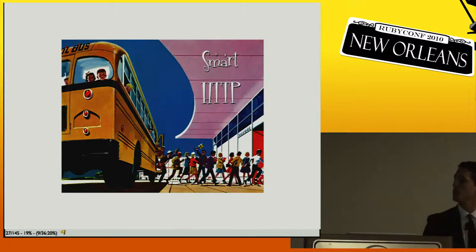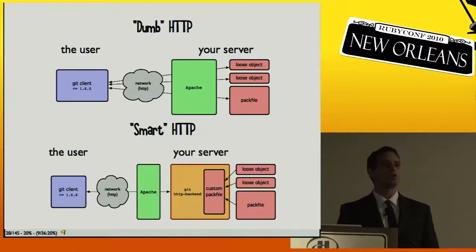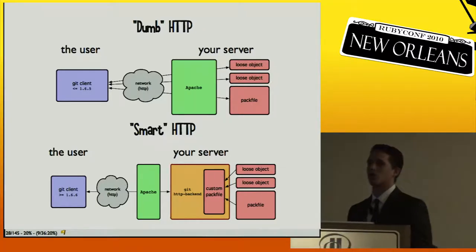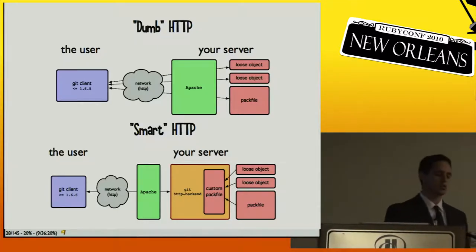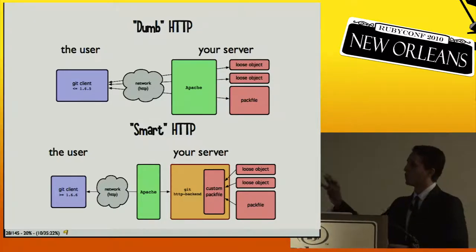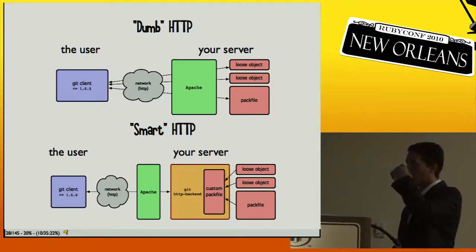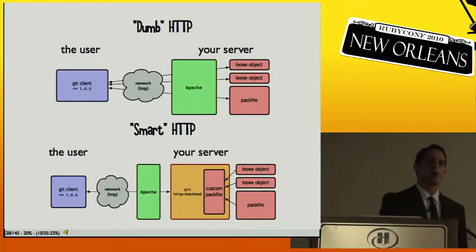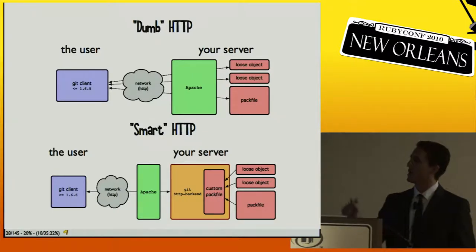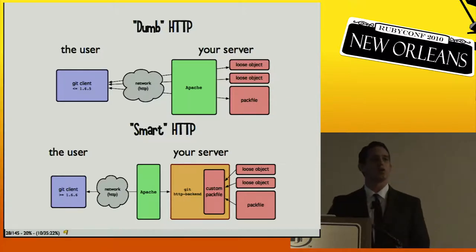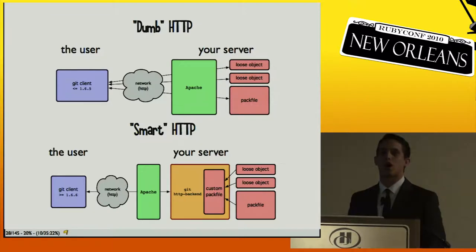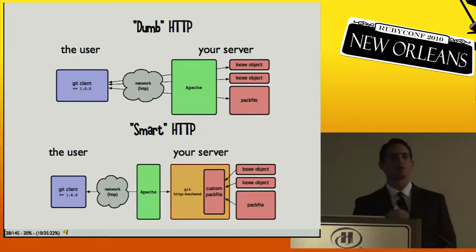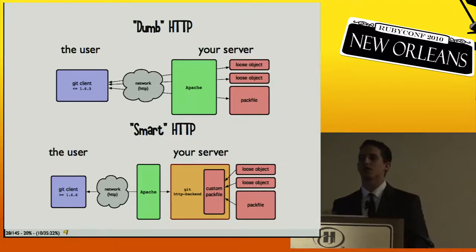Smart HTTP is also fairly new. Before, you had to use the Git protocol or SSH to transfer data. HTTP was supported but very dumb — it would download entire pack files just to get one object, which was very inefficient. Now Git does something much more similar to SSH: it figures out all the objects you need, builds a custom pack file, and sends it down. This also goes through firewalls much more easily.